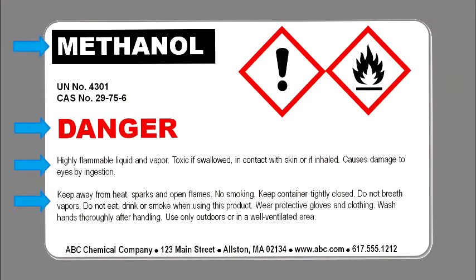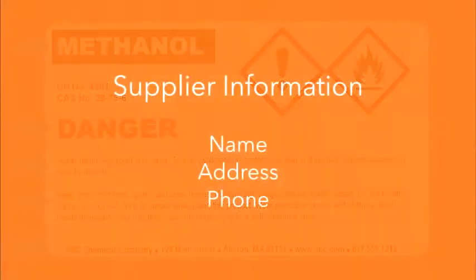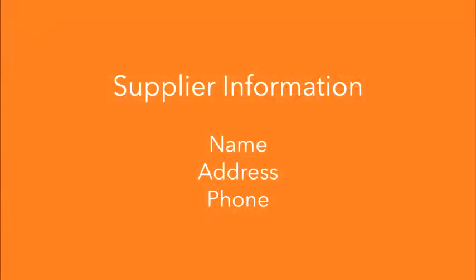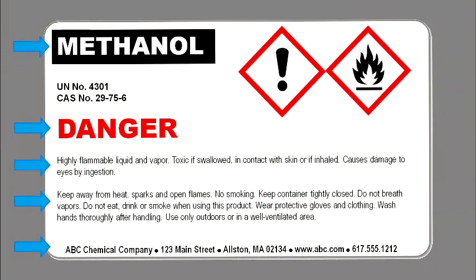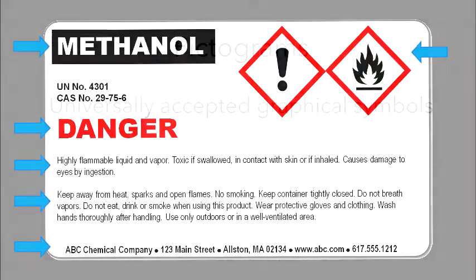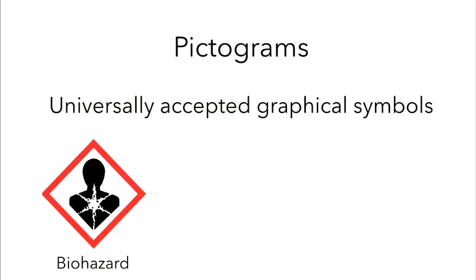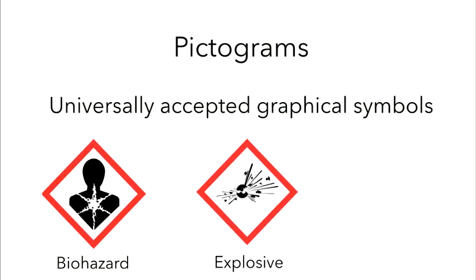Number five is supplier identification — the name, address, and telephone number of the manufacturer or supplier of that chemical. Number six is pictograms: the graphical symbols in red and black that are intended to convey specific hazard information visually.